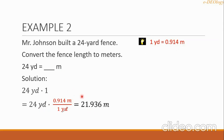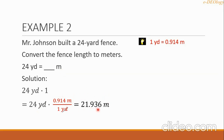We proceed to multiplication: 24 multiplied by 0.914 gives 21.936, and the unit meter remains. So the final answer is 21.936 meters.